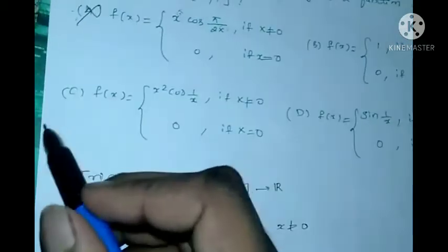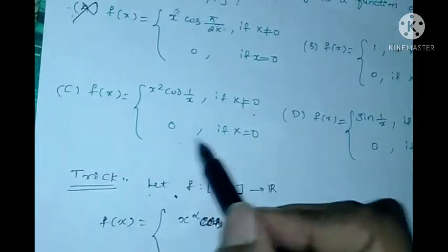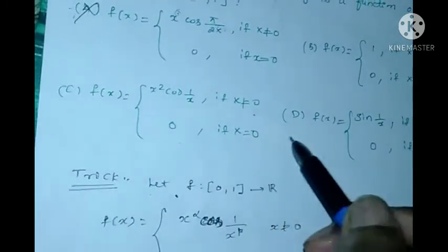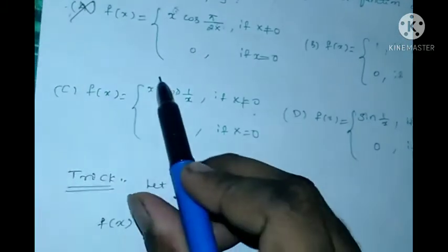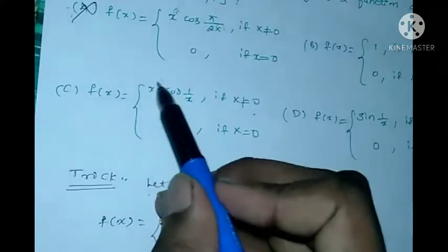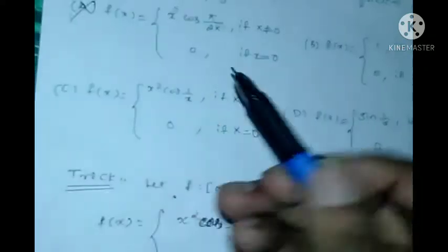We check Option C: f(x) = x²·cos(1/x) for x≠0, 0 if x=0. Here alpha is 2 and beta is 1. Since 2 is greater than 1, therefore this is the correct answer for this question.